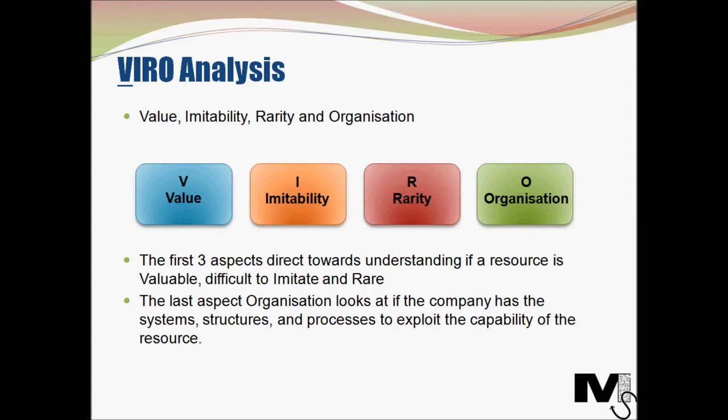The first three aspects — Value, Imitability, and Rarity — direct us toward understanding if a resource is valuable, difficult to imitate, and rare. The last aspect, Organization, doesn't focus on the resource itself but instead looks at the company to understand if it has the systems, structures, and processes to actually exploit the capability of the resource and sustain the competitive advantage derived from it.